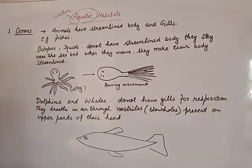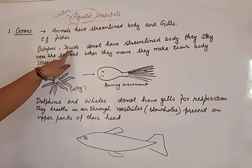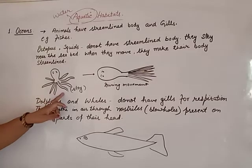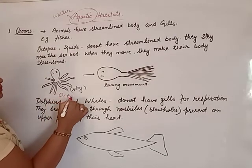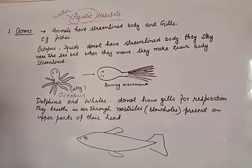Now another category: some animals do not have a streamlined body but they can still survive and move in the water. Examples are octopus and squid. These animals survive in aquatic habitat but they do not have a streamlined body. For example, octopus has eight legs — this is not a streamlined body. Squid also does not have a streamlined body.